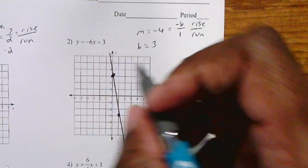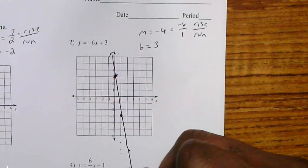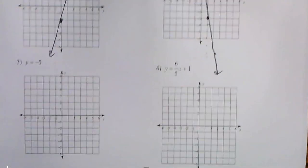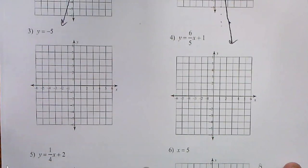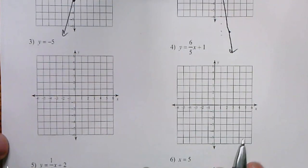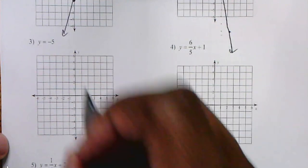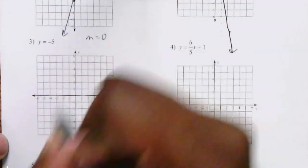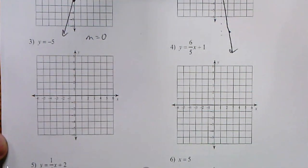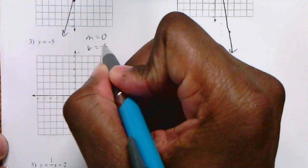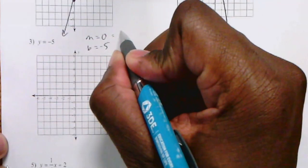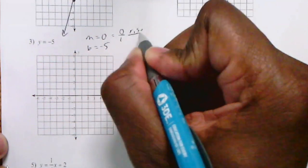Let's go to number 3. Number 3 gives you y equals negative 5. In this case, your slope is zero because you don't have an x there. Your y-intercept is negative 5. If you made zero a fraction, that would be 0 over 1. That's your rise over run.